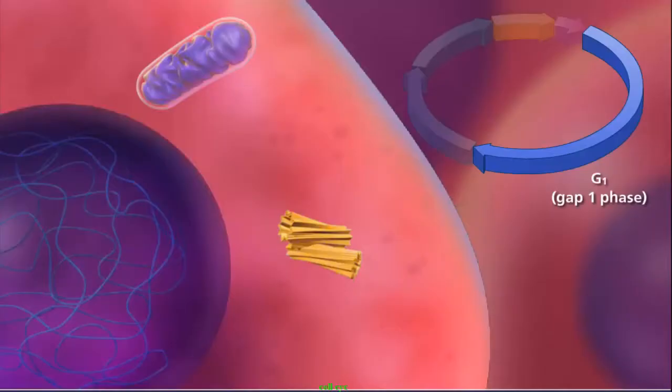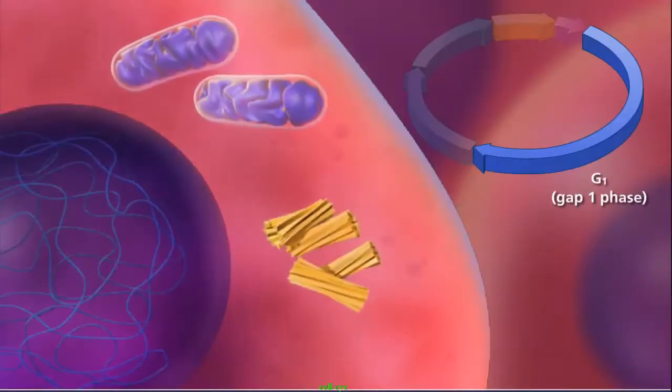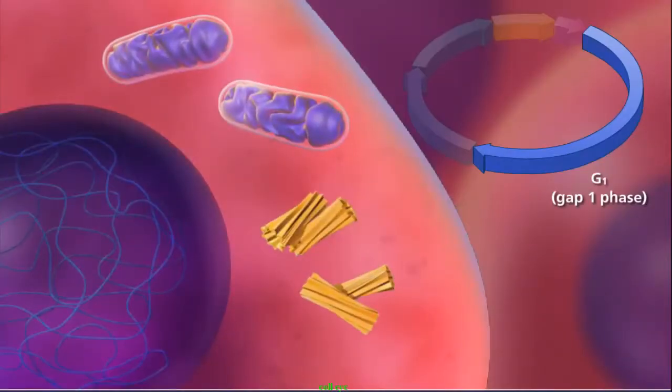During G1 or GAP1 phase, all the organelles and cytoplasmic components, including the centrioles in animal cells, replicate.